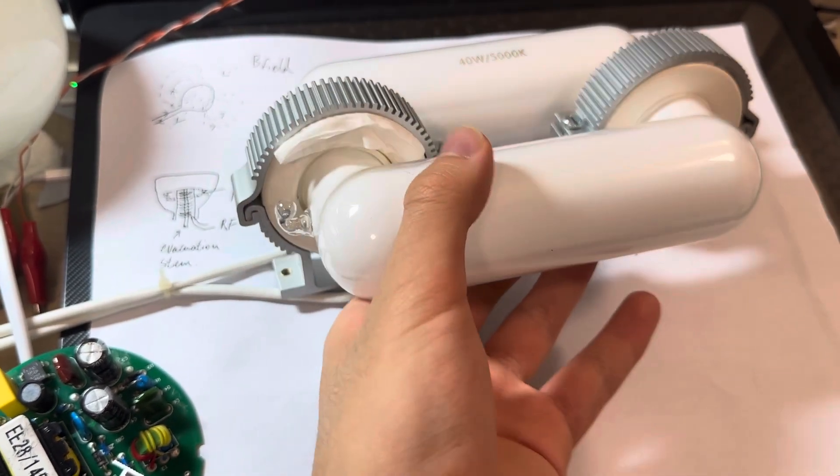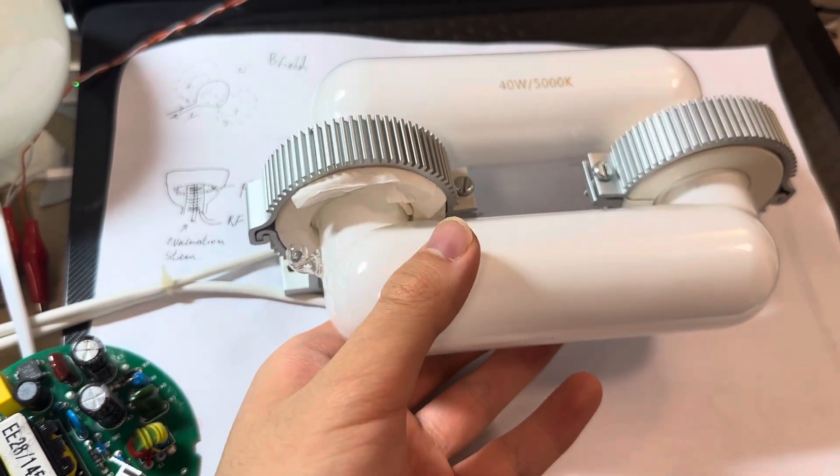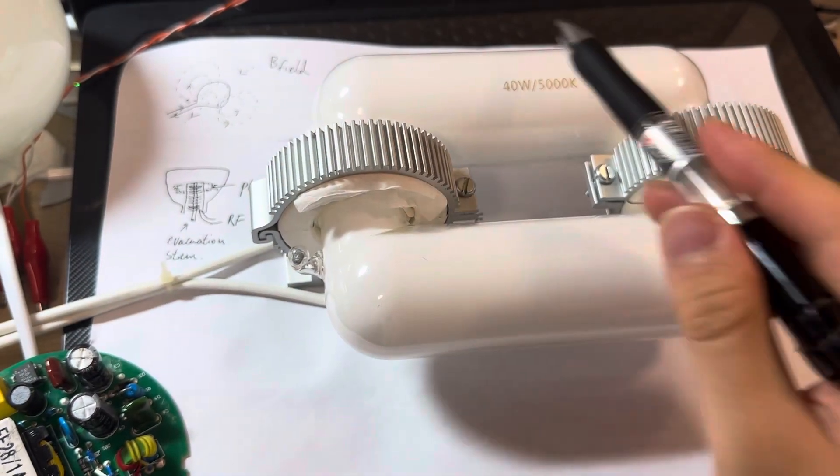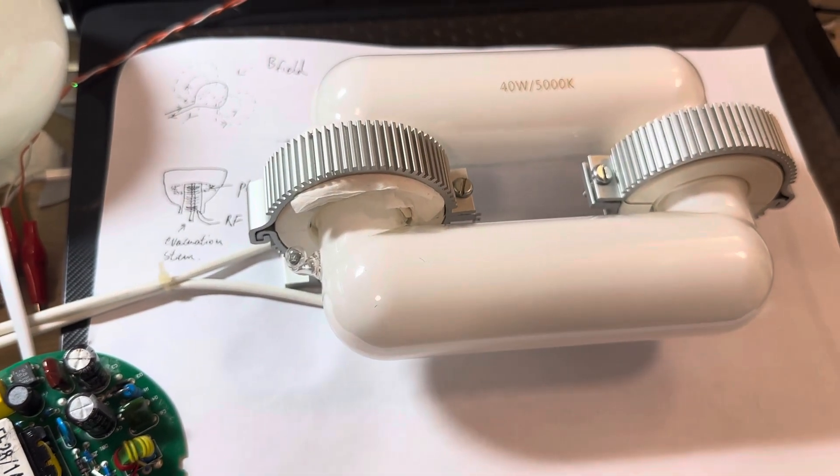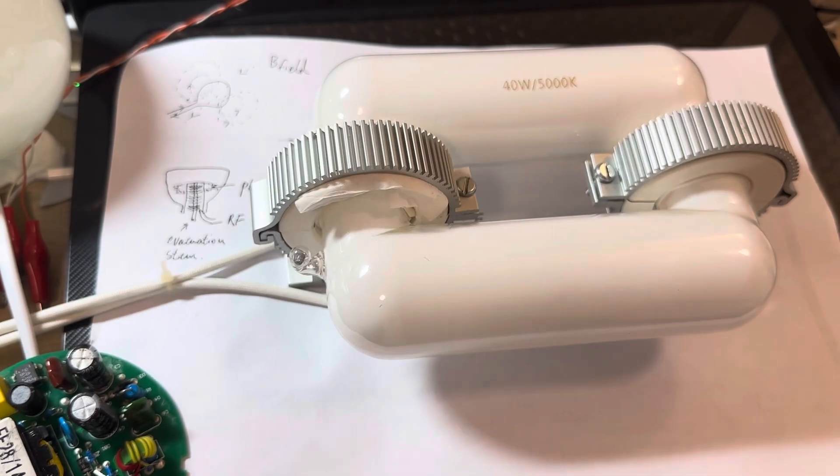Because it has two toroids, in theory it can be operating at slightly lower voltage compared to the previous one with a single toroid, and that allows a much longer lamp. In theory you can add up as many toroids as you want, but they all have to be added up in phase.